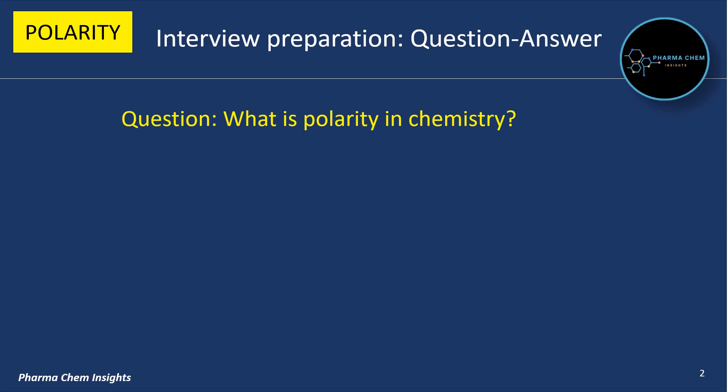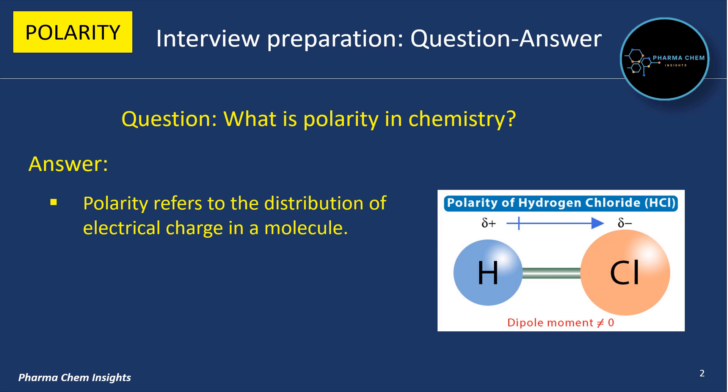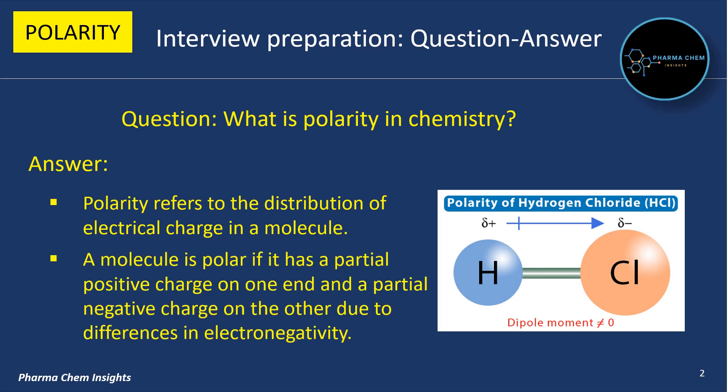First question: what is polarity in chemistry? Answer: polarity refers to the distribution of electrical charge in a molecule. A molecule is polar if it has a partial positive charge on one end and a partial negative charge on the other due to differences in electronegativity.